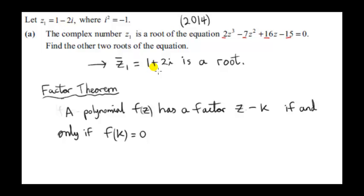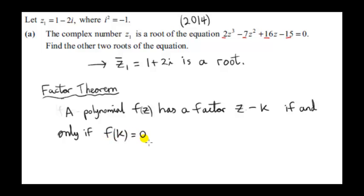So we have two roots found. In general, a cubic equation has at most three distinct roots. So if there's a third root and we want to find it, we can use the factor theorem. As a reminder, the factor theorem says that a polynomial f of z — in this case our f of z is a cubic — has a factor z minus k if and only if f of k is 0.